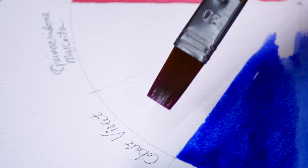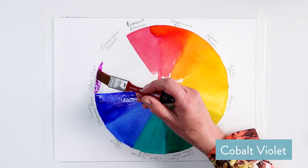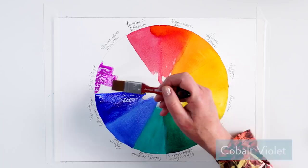The next color is cobalt violet, and here you can actually see the granulation on the paper. This is a granulating paint, but it's actually also transparent.